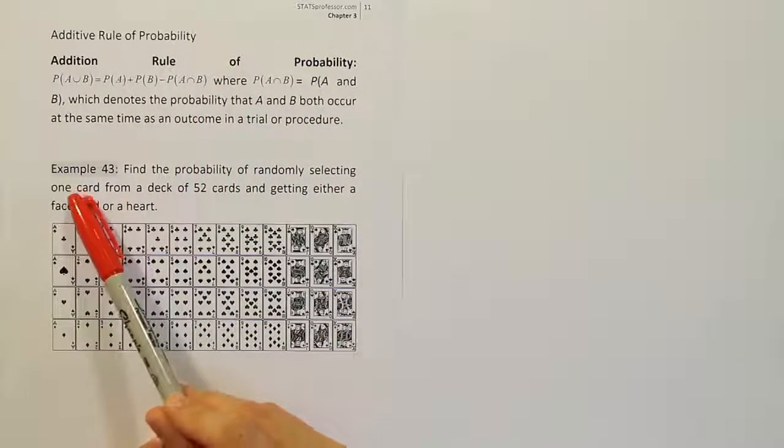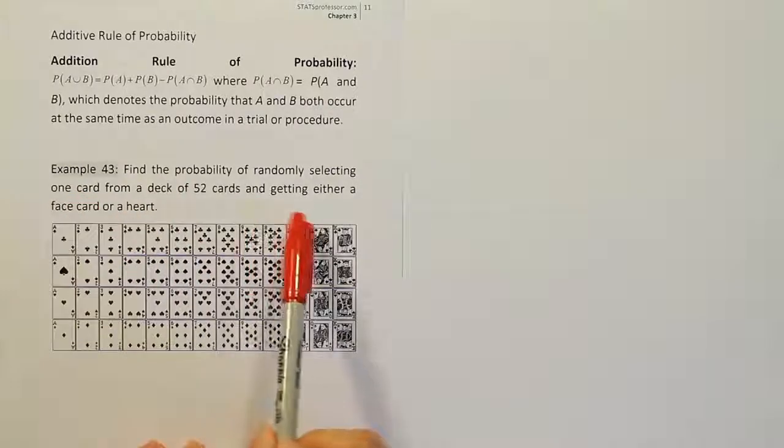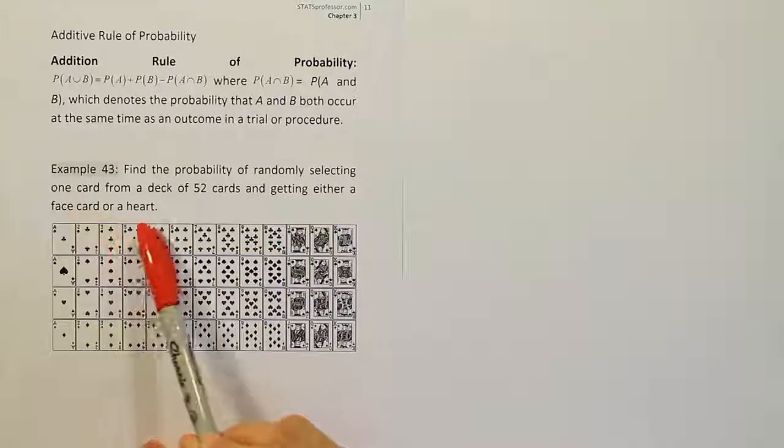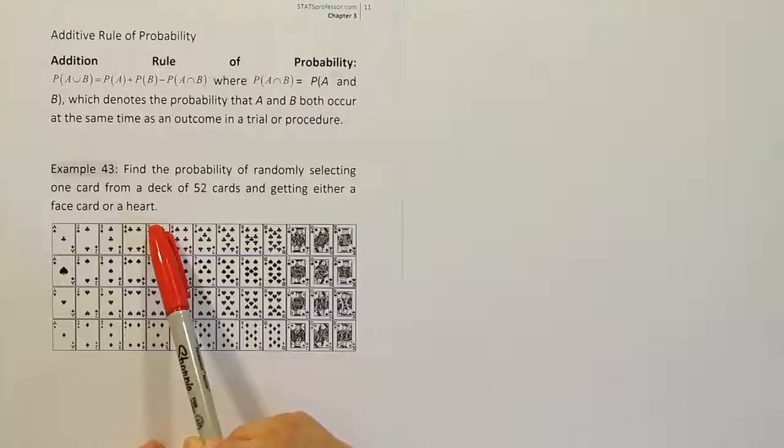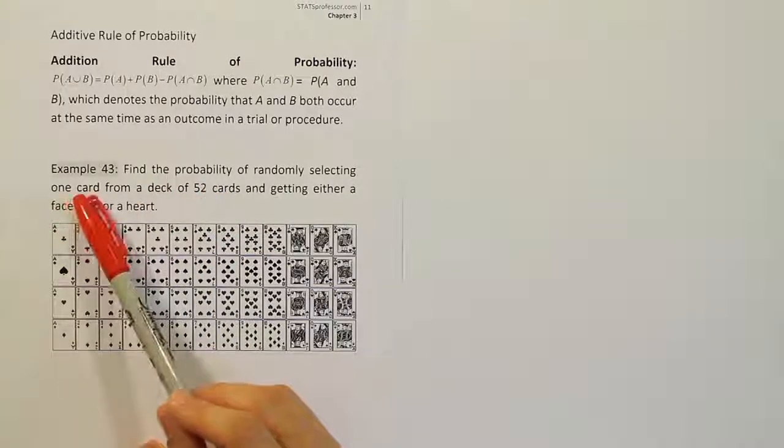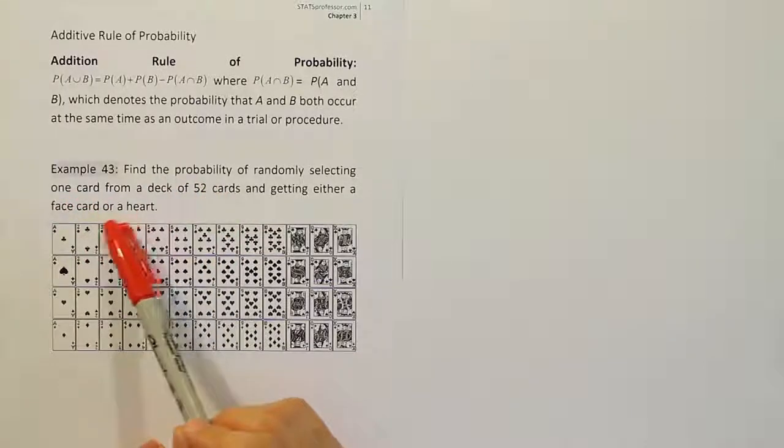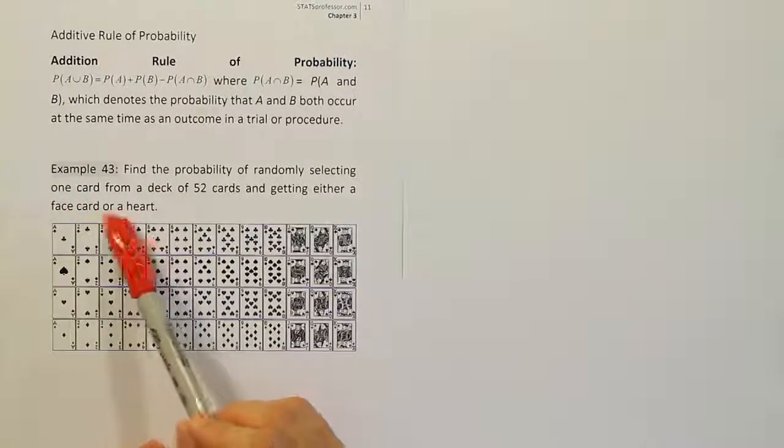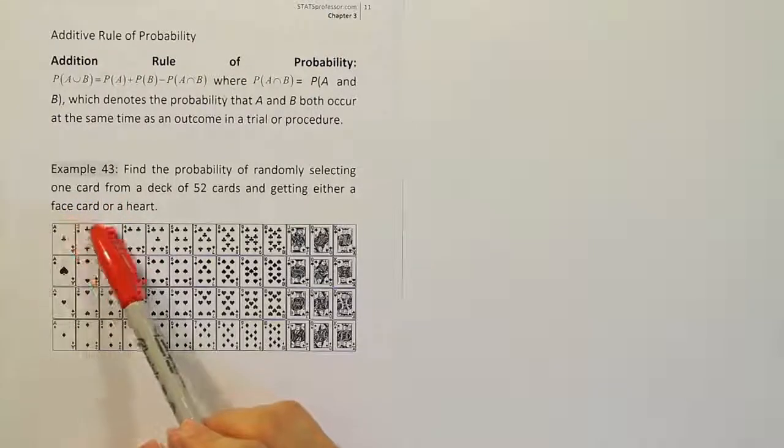In other words, you're taking one card and you're asking, is it from this group, face card, or from this other group, heart? And that's the condition that makes it the addition rule of probability. Because you have find the probability, one thing is being selected, and you have the word OR present in the problem.